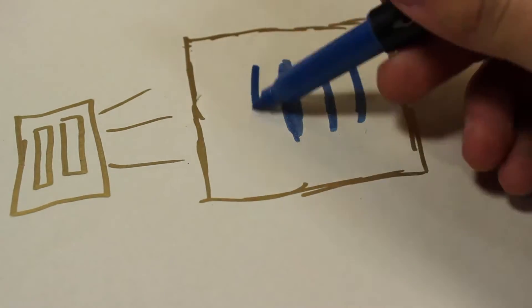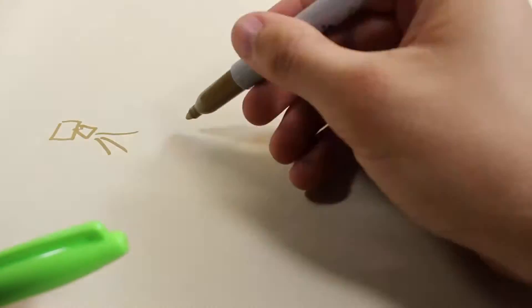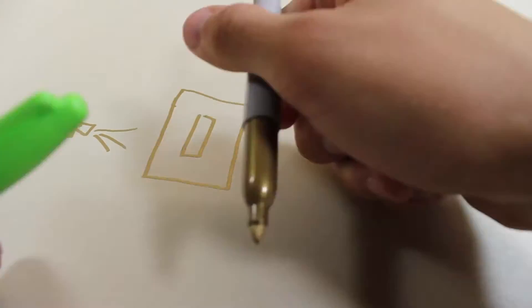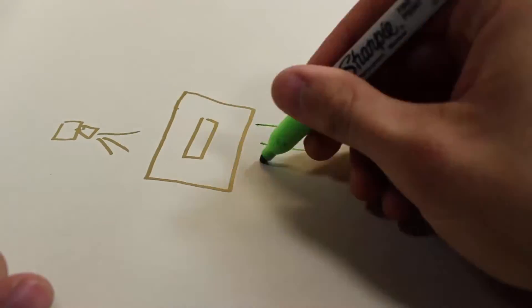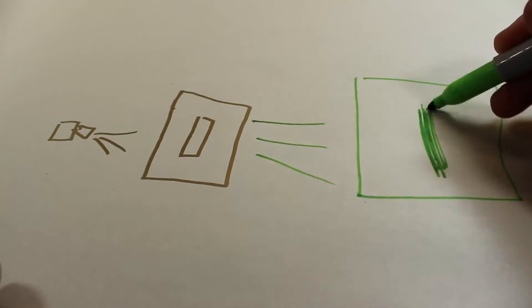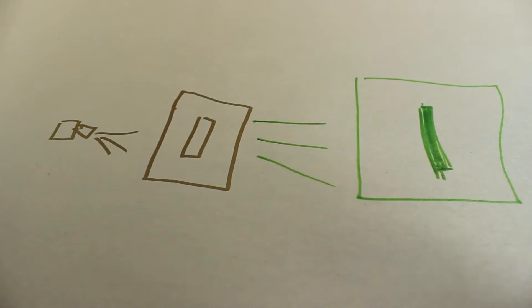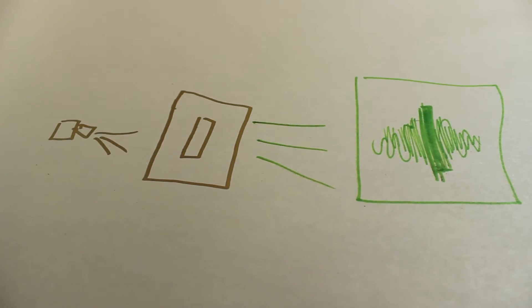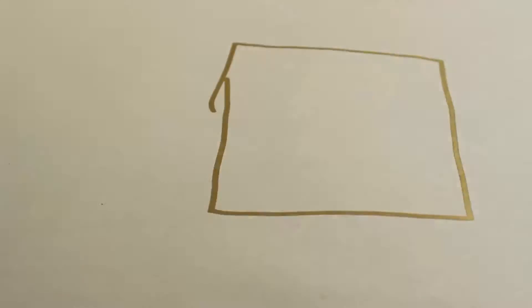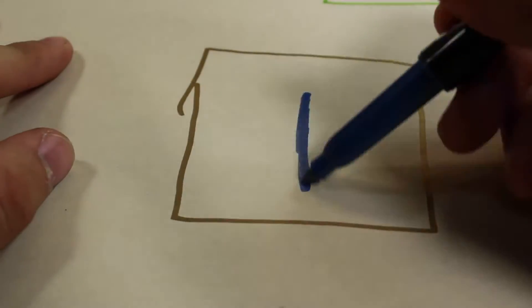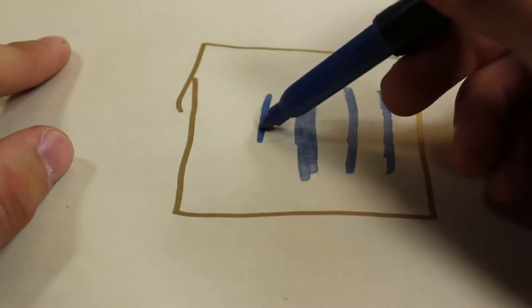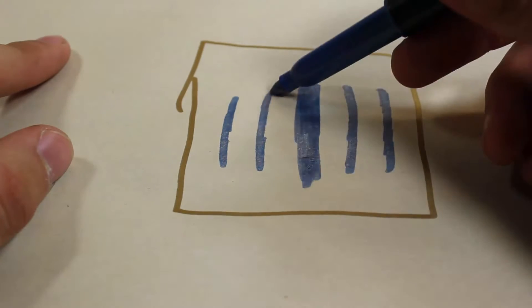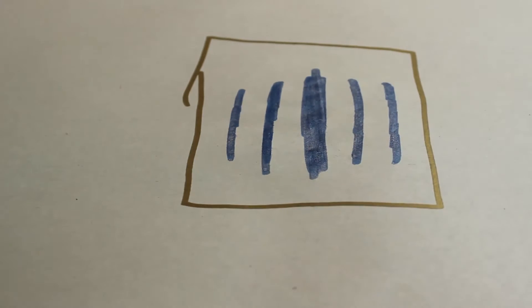As it turns out, when you shine light through a single slit, it behaves very much like a particle of matter, only producing a single line. But when you use two slits, the photon begins to act like a wave. What could this mean?